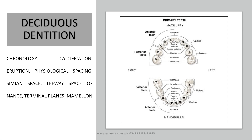Next topic is deciduous dentition. You should know the chronology — calcification timing and eruption timing — physiological spacing, what simian space or anthropoid space is, the leeway space of Nance, and the different types of terminal planes: mesial step, distal step, and flush terminal plane. Know how to assess mesial and distal step and what the prediction for permanent dentition occlusion will be based on these terminal planes, and about mamelons.